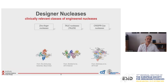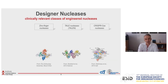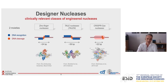The designer nucleases which have been translated to the clinic are three. They are named zinc finger nucleases, TALEN nucleases, as well as CRISPR-Cas nucleases. They are biochemically rather different, but what they have in common is that they consist of two different parts. One part is responsible for DNA recognition, so recognition of the target site, and the other part is responsible for DNA cleavage once the target site has been bound.